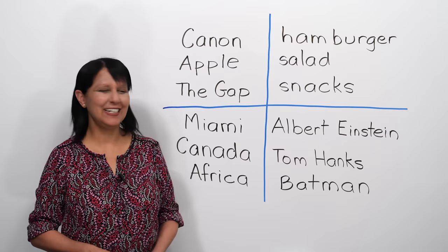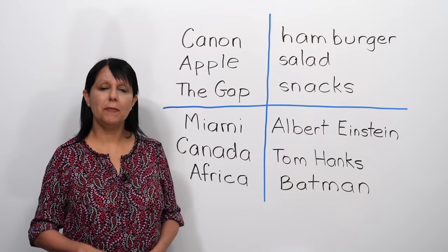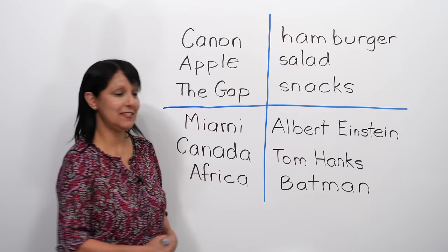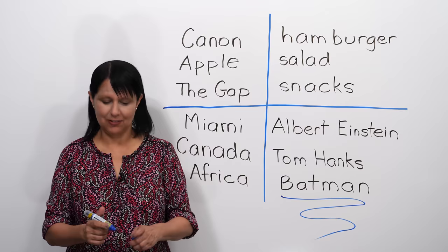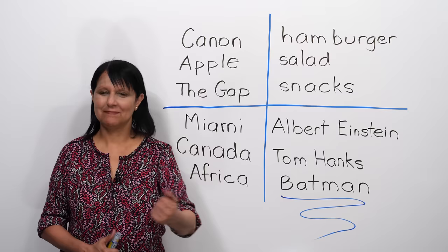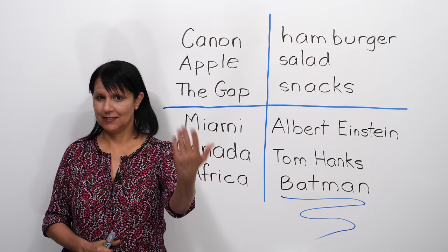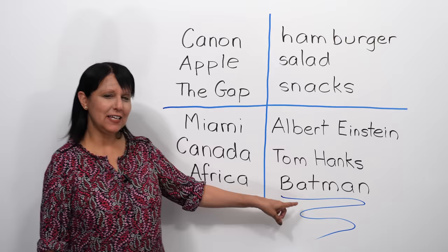Now let's say the names of some famous people. Albert Einstein. Good. Tom Hanks. Good. And this is the test. If you can say this, you've got that short A sound because it's there in two places. Are you ready? Batman. Let's do it again. Batman. Batman. One more time. Batman. If you're saying that properly, that's great.